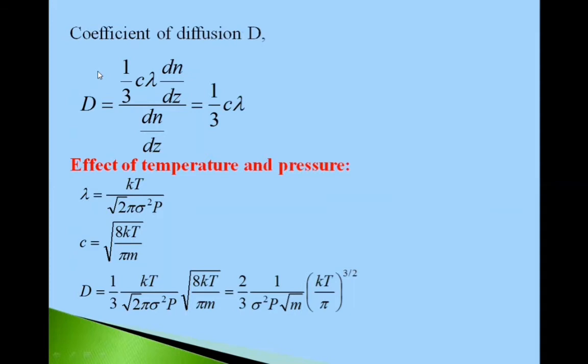So, coefficient of diffusion capital D is given by ratio of this 1 upon 3 C lambda dN by dz and this dN by dz. So it gives one third C lambda.